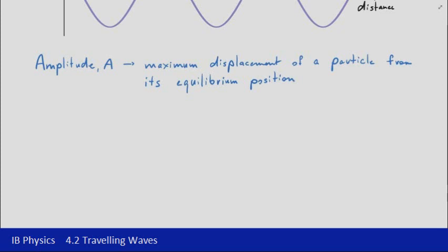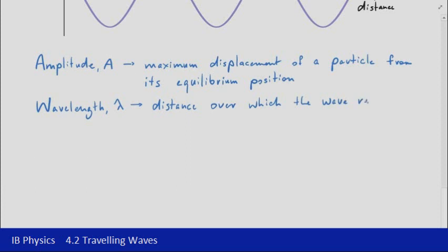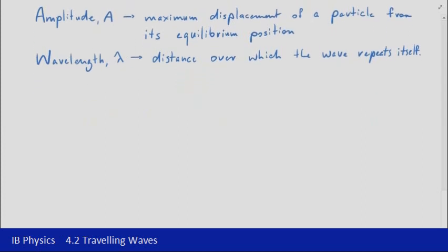The second property is wavelength, represented by the Greek letter lambda. Wavelength, as the name suggests, is the distance or length over which the wave repeats itself. That could be from one peak to the next peak, from one trough to the next trough, or from one compression to the next compression in a longitudinal wave — you're looking for that repeating pattern of the distance between those two equivalent points.